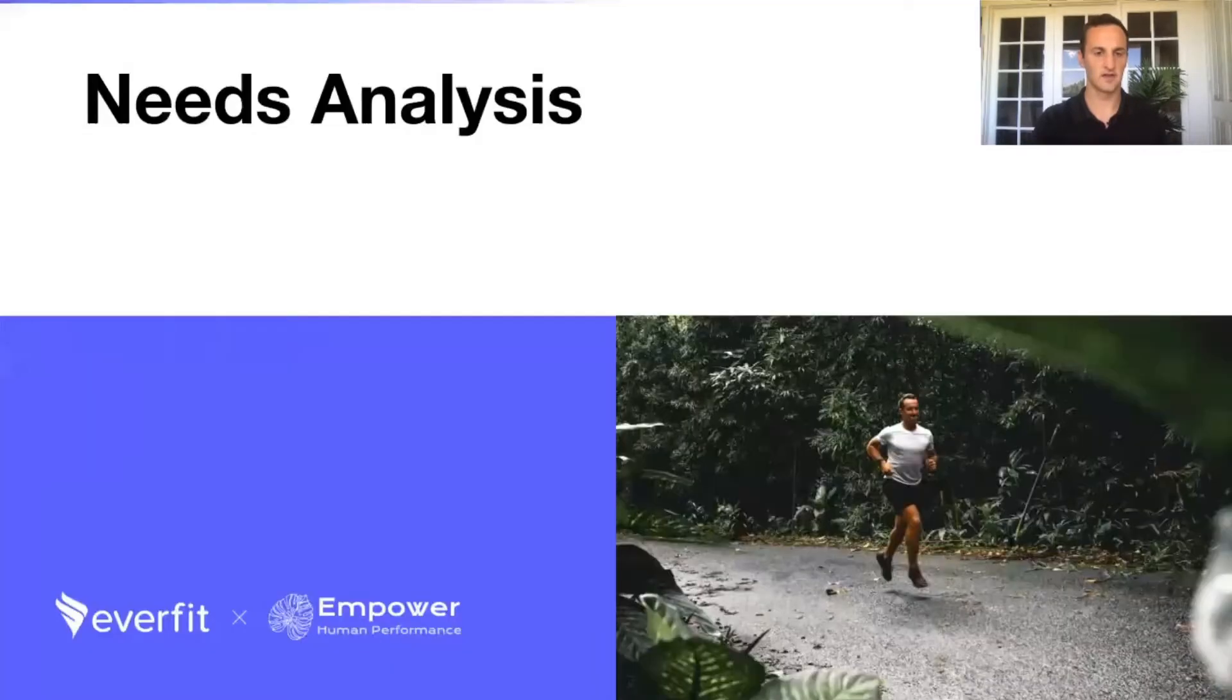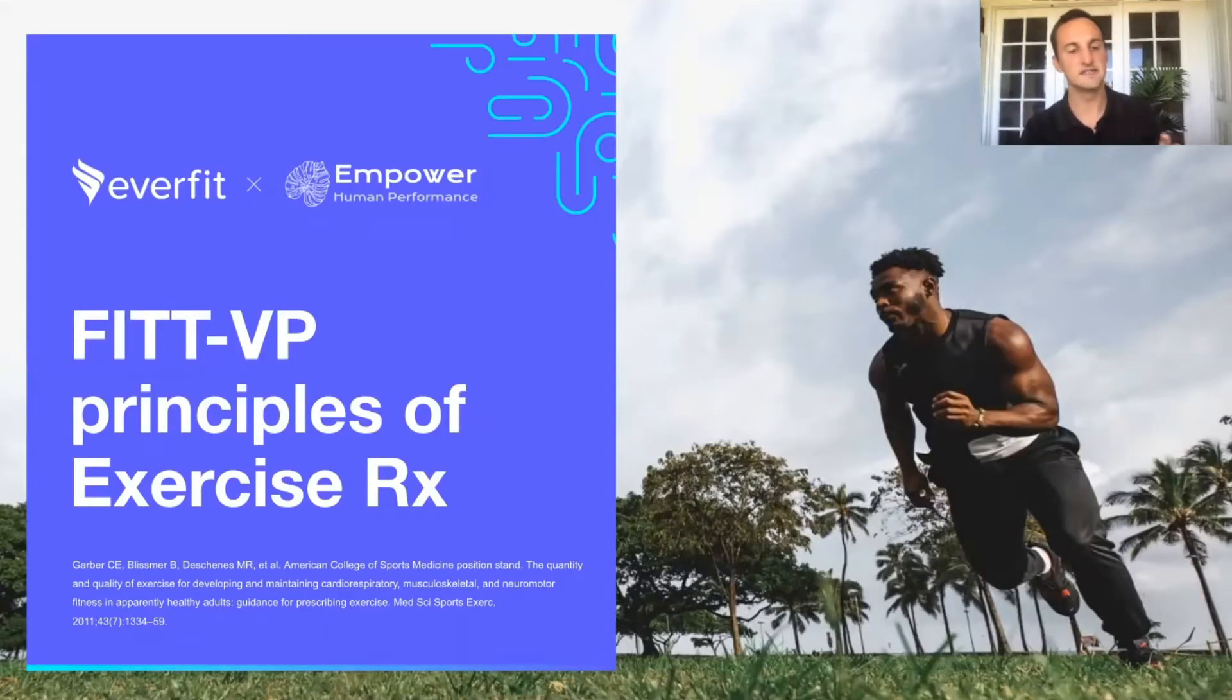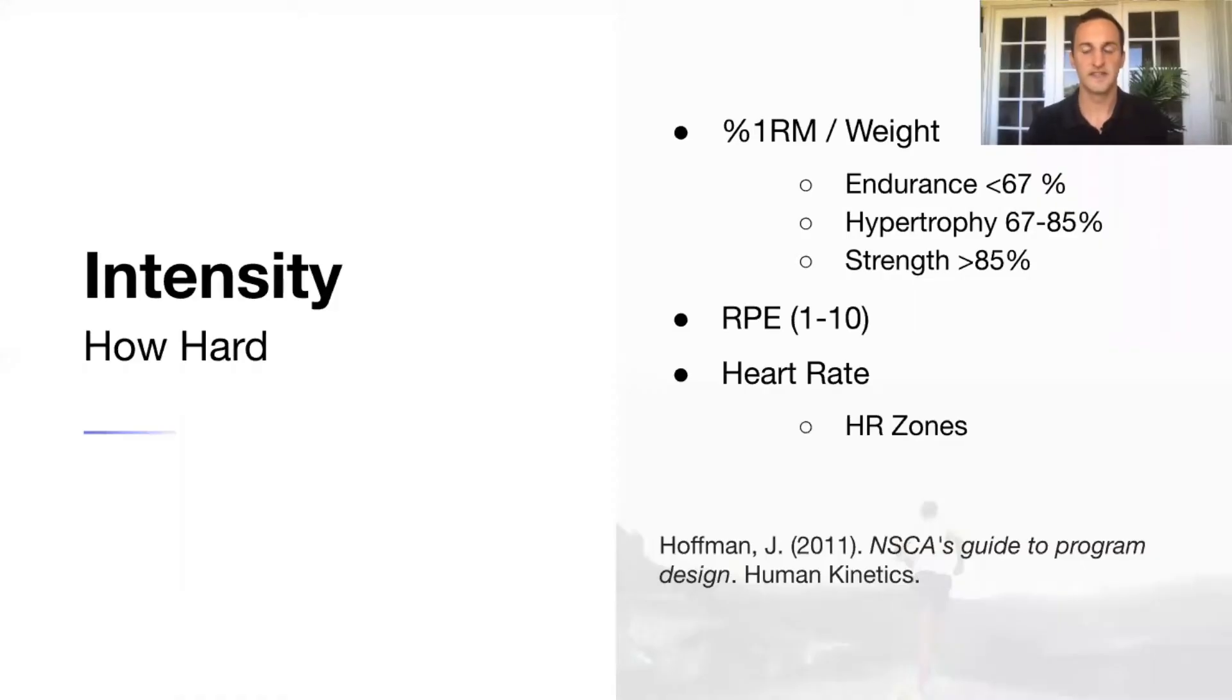Let's dive into intensity, so how hard. With this, if you have an individual's one repetition maximum, the percent of their one RM is a good way to gauge the intensity. This will give you a weight. The NSCA, National Strength and Conditioning Association, these are block categories.